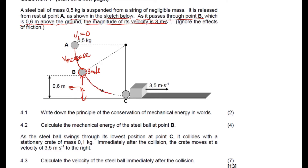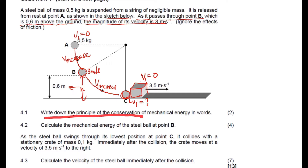The ball proceeds further down, velocity still increases, and just before it hits the object at the lowest point, it reaches a velocity we call the velocity before collision. The stationary object has an initial velocity of zero before the collision. We do not yet know the steel ball's velocity just before it collides.